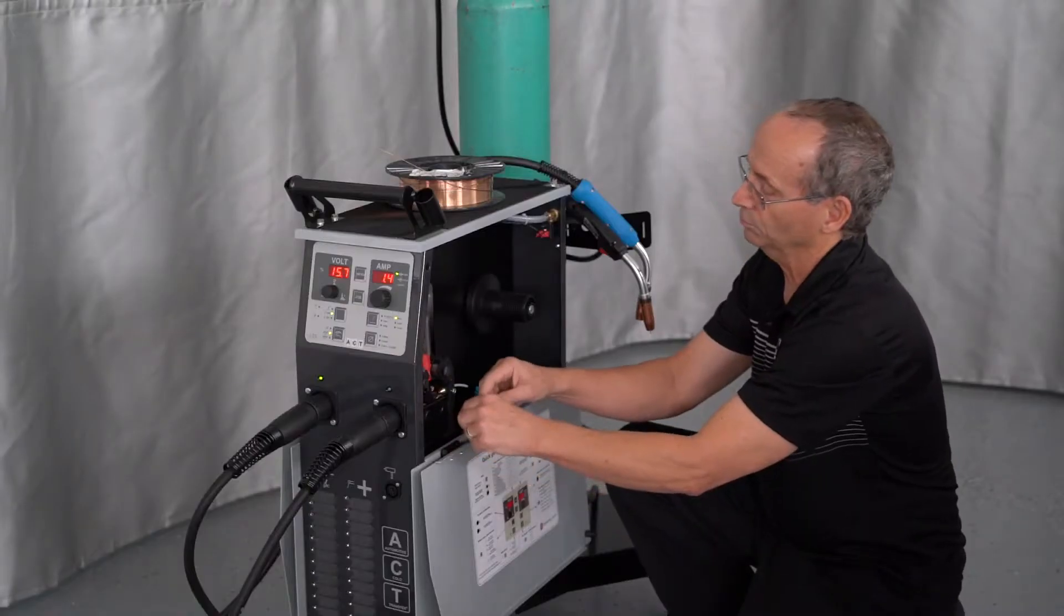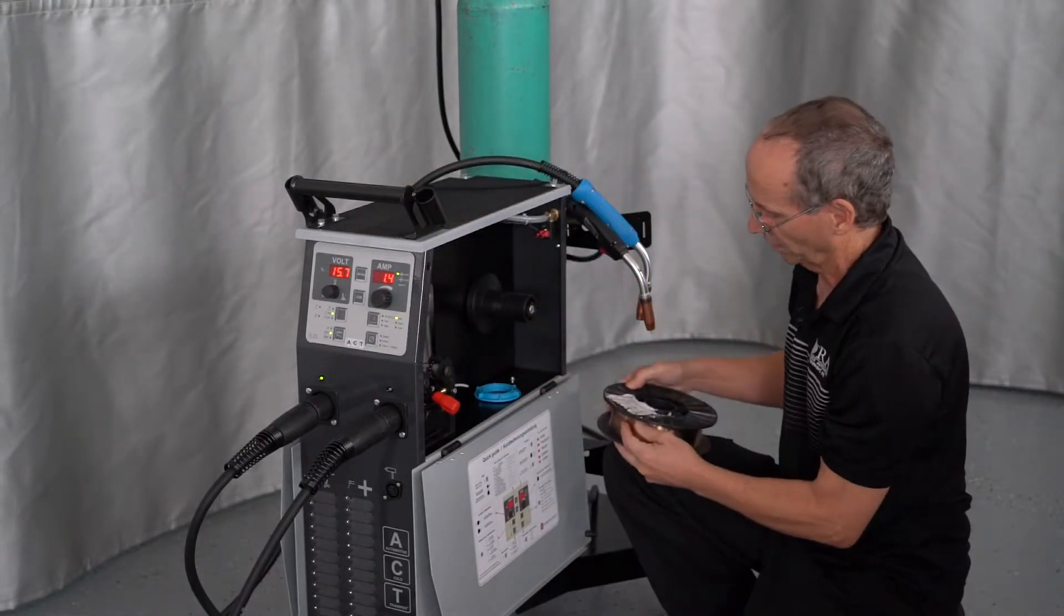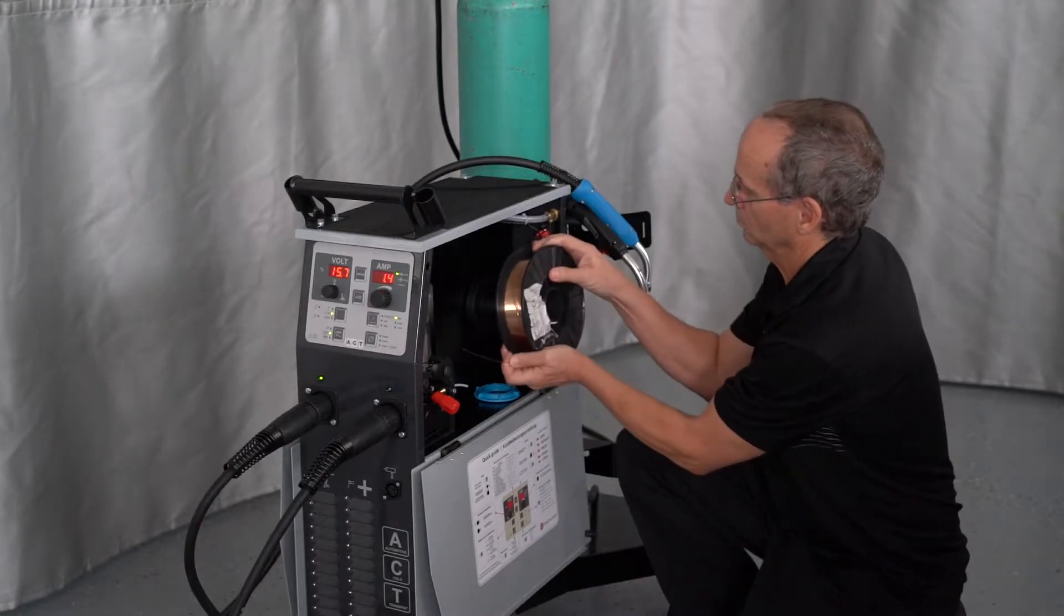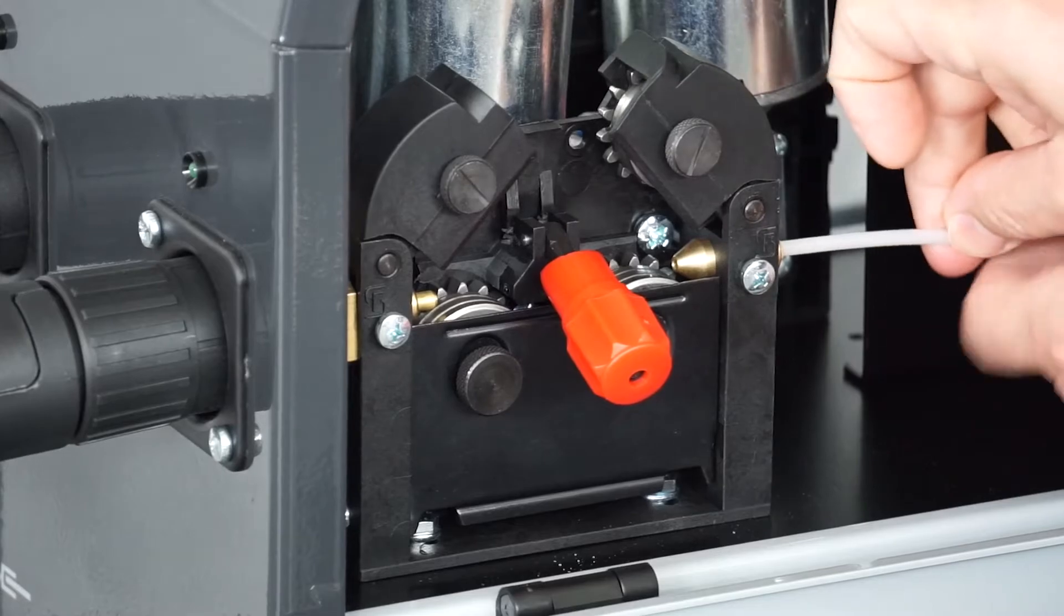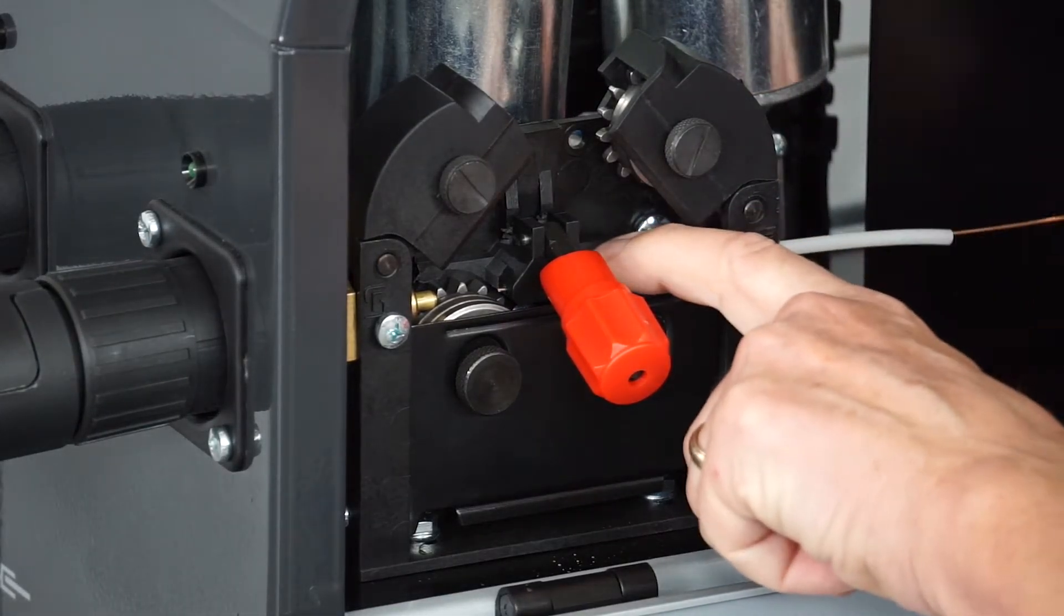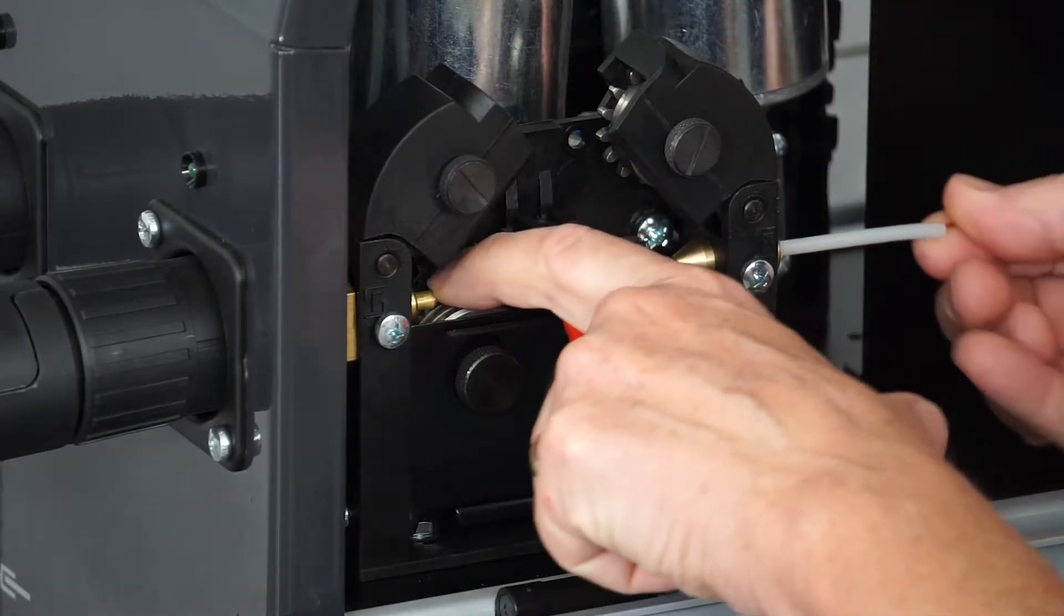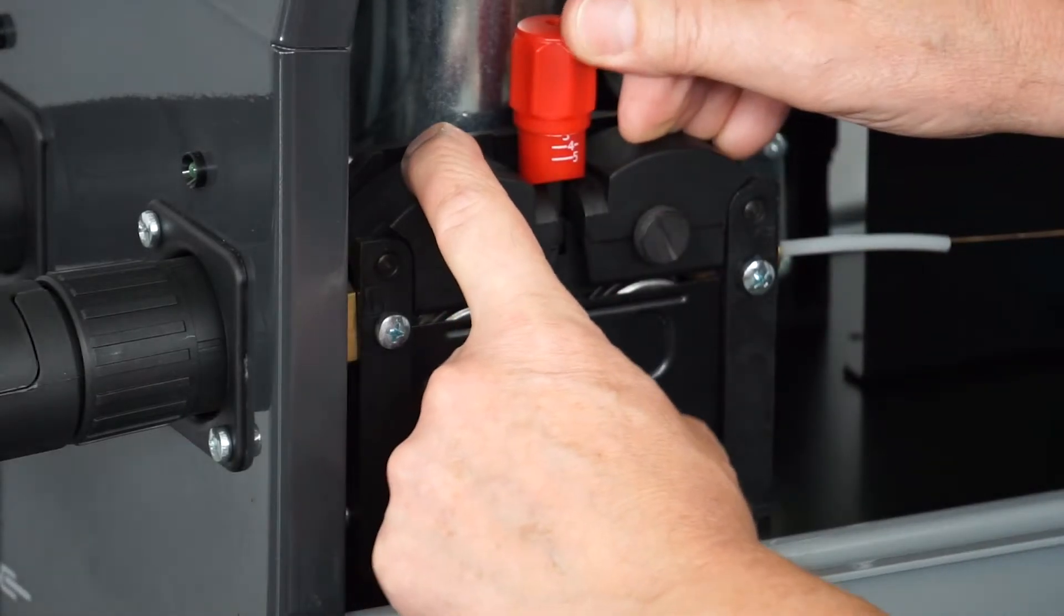Once we have the roller set, it's going to be just like loading on a regular MIG. We're going to take our wire and start feeding through. Come into the middle, go through the center section, go into the liner of the gun assembly, and now we can pull the rollers down, flip the lever up.